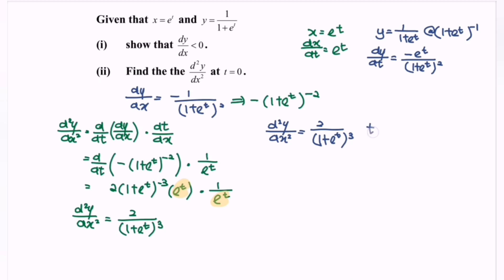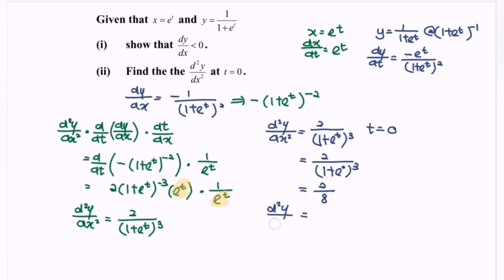If we substitute the value of t equals 0, we will have 2 over 1 plus e to the power of 0, to the power of 3. e to the power of 0 is equal to 1, so we will have 2 over 8. Finally, the second derivative is equal to 1 over 4 when t is equal to 0.